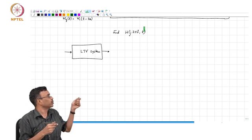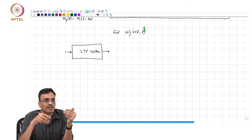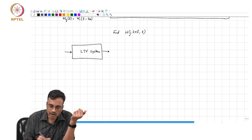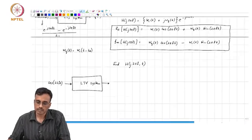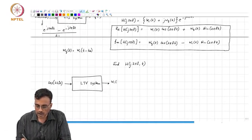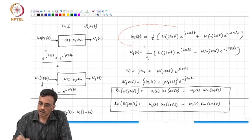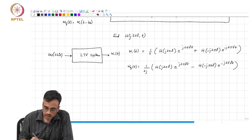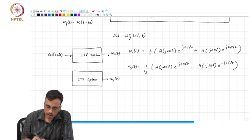So what do you suggest we do? I mean we obviously cannot put in e^(j2πft) and then look at the output. If you are in a lab, the only thing you can do is you either put in a cosine or a sine or both. So taking a cue from the time invariant case, if you put in cosine(2πft), what do you get at the output? Let us call this again W_i(t), what will you get at the output? Well that is easy.